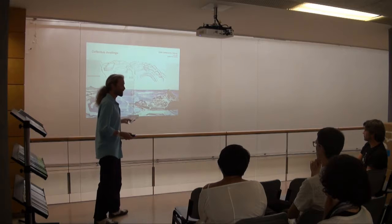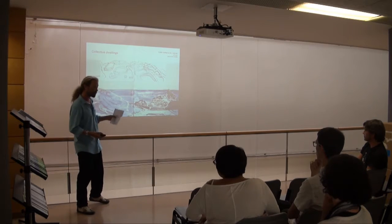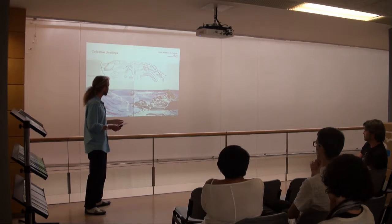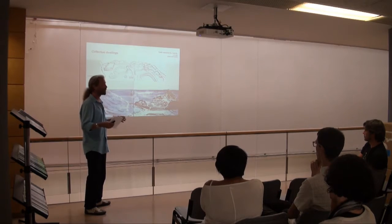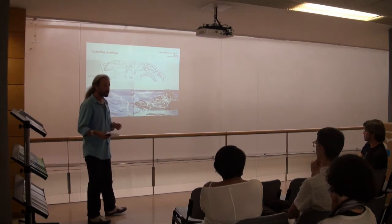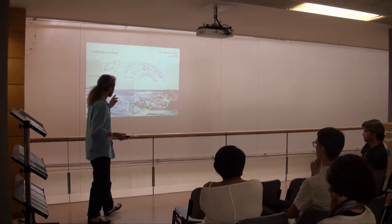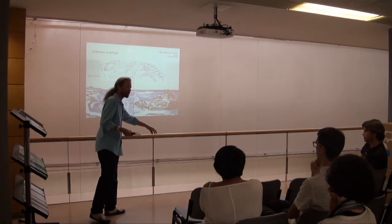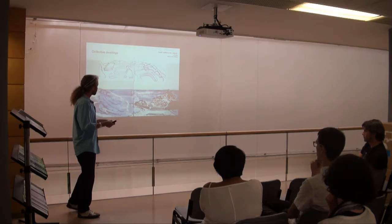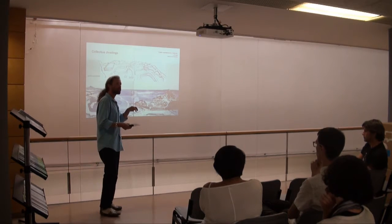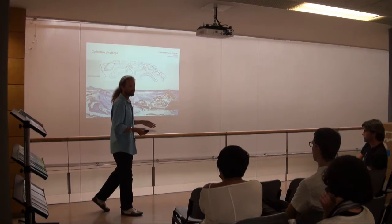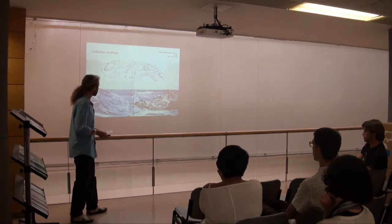Here we have a Celtic settlement, a thousand years later, around the time of Christ and the Romans, up in Galicia — two Celtic settlements with a similar series of individual huts grouped together. As far as we know, you can see where the fireplace is, where the entrance is, and various other remains. It seems likely that a family group would have occupied three or four or five of these huts, but that would have changed every time — different families, different combinations.